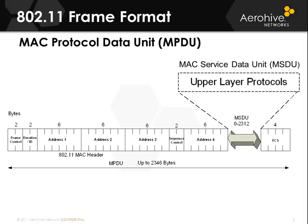The MAC service data unit, MSDU, or the upper layer protocol payload can be encrypted so you're not really going to see the payload. Everything else in that 802.11 frame is going to be in clear text always in order for 802.11 to function properly. Even on a wired network, the layer 2 information is always visible on the subnet.